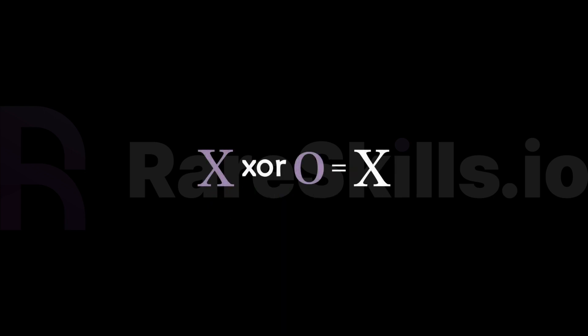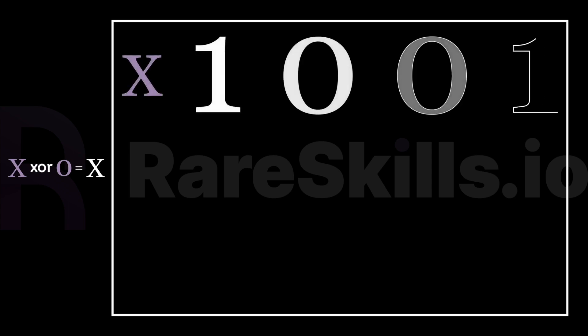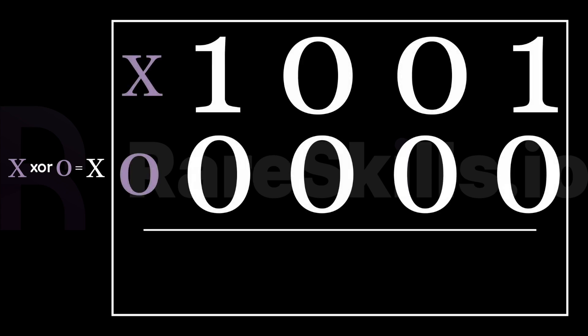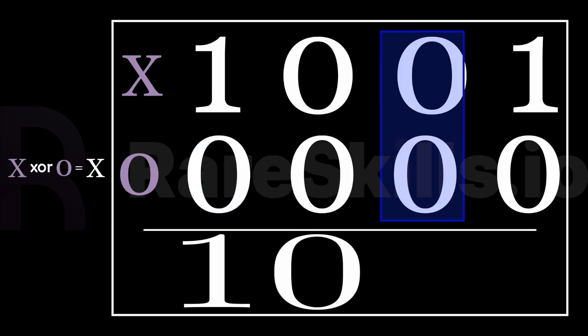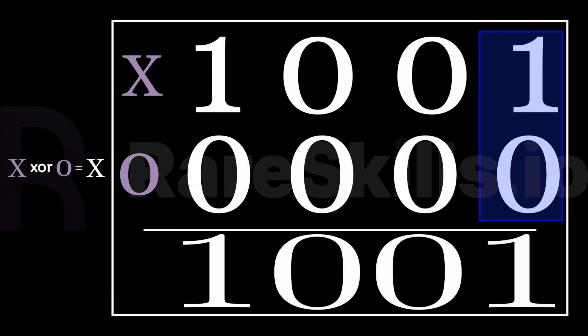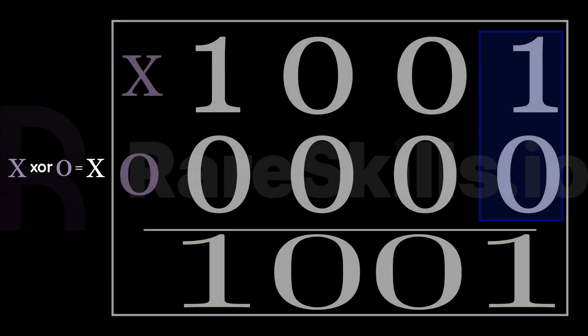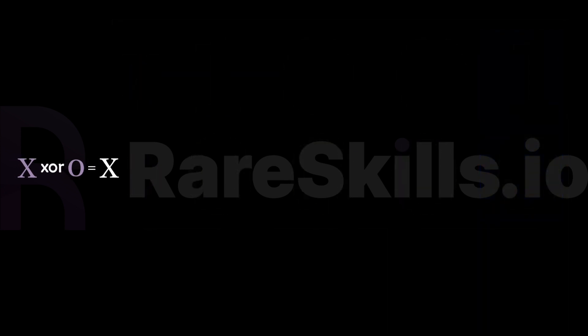The first rule of xor is that any variable x xor 0 is x. Specifically, the 0 bits of x when exclusive or'd with 0 will produce 0, and the 1 bits of x when exclusive or'd with 0 will produce 1. This means that the bit values of x get preserved. All of the 0 bits in x become 0 in the output, and all of the 1 bits in x become 1 in the output.